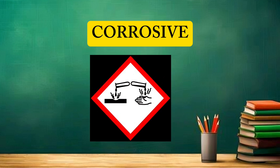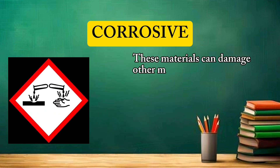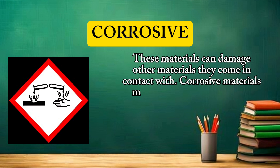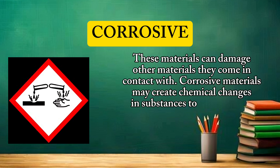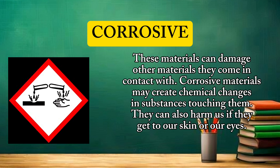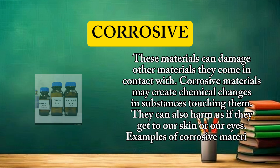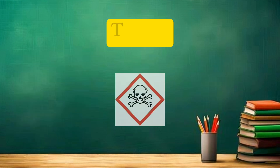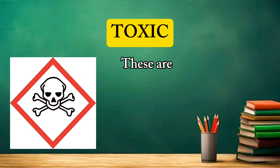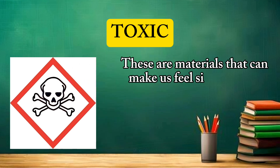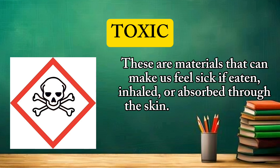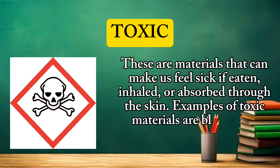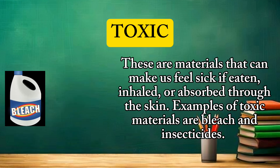Corrosive: these materials can damage other materials they come in contact with. Corrosive materials may create chemical changes in substances touching them, and they can also harm us if they get to our skin or our eyes. Examples of corrosive materials are highly concentrated acids. Toxic: these are materials that can make us feel sick if eaten, inhaled, or absorbed through the skin. Examples of toxic materials are bleach and insecticides.